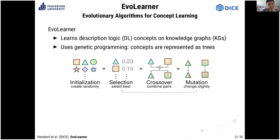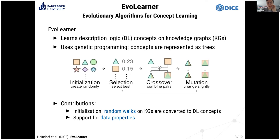Our main contributions in this paper are twofold. First, we propose a novel initialization method: the idea is that if initialization is done very well, we need much fewer generations later on. We perform random walks on the knowledge graph and convert them to description logic concepts, and we can show that this really improves performance a lot. Moreover, in many practical applications data properties are very important, so we also add support for data properties in our approach.